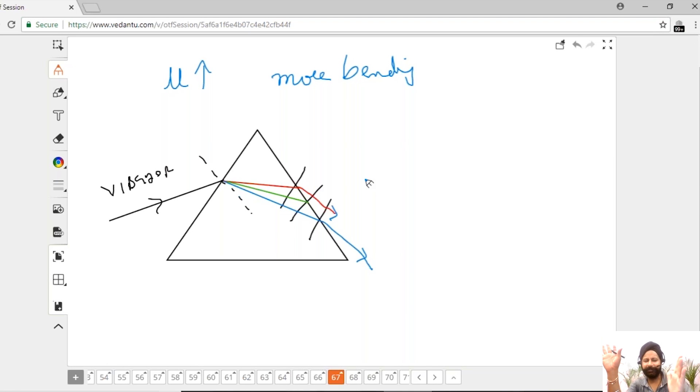Now same goes with the wave fronts. Now red wave front will bend less because its speed, sorry, red wave front will bend less. It didn't slow down as much as blue. More the slowdown in glass, more the bending. Clear?